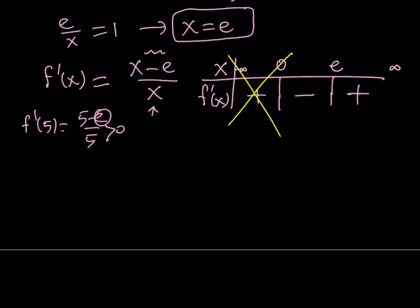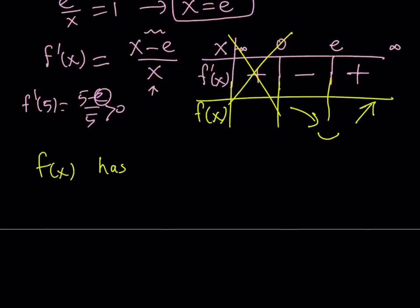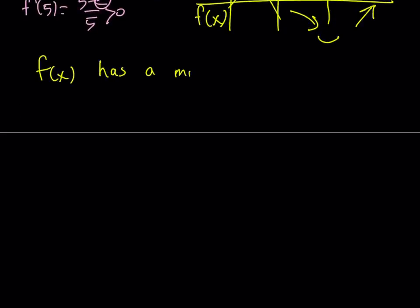This tells us that if f prime is negative on an interval the function is decreasing, and if f prime is positive the function is increasing. So at x equals e, our function transitions from decreasing to increasing, which means f of x has a minimum at x equals e.